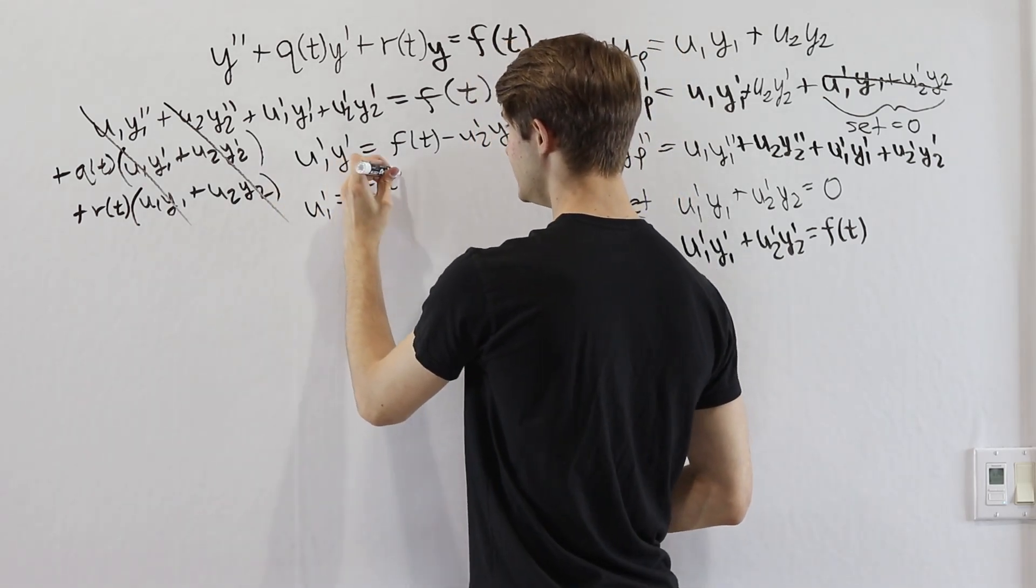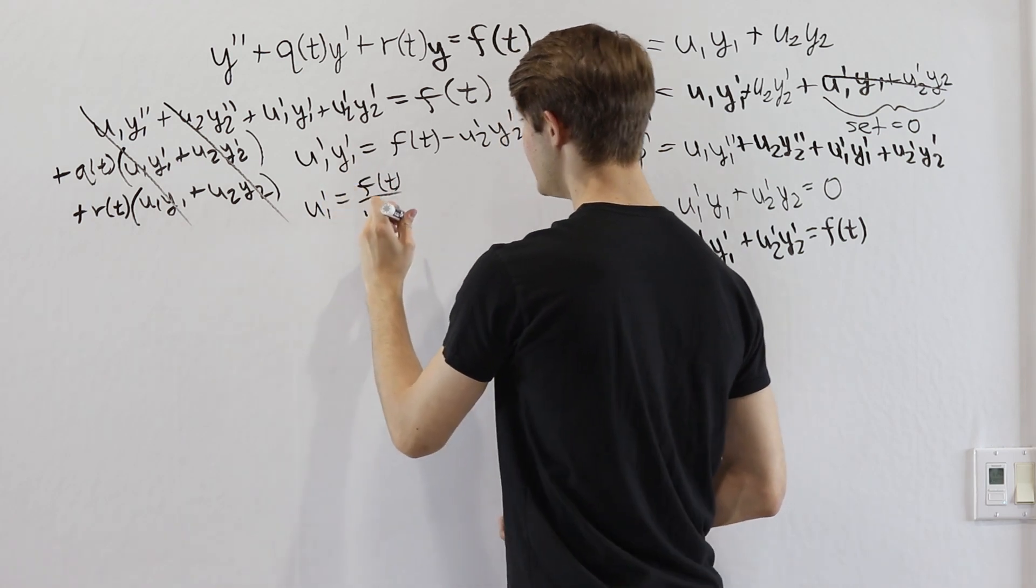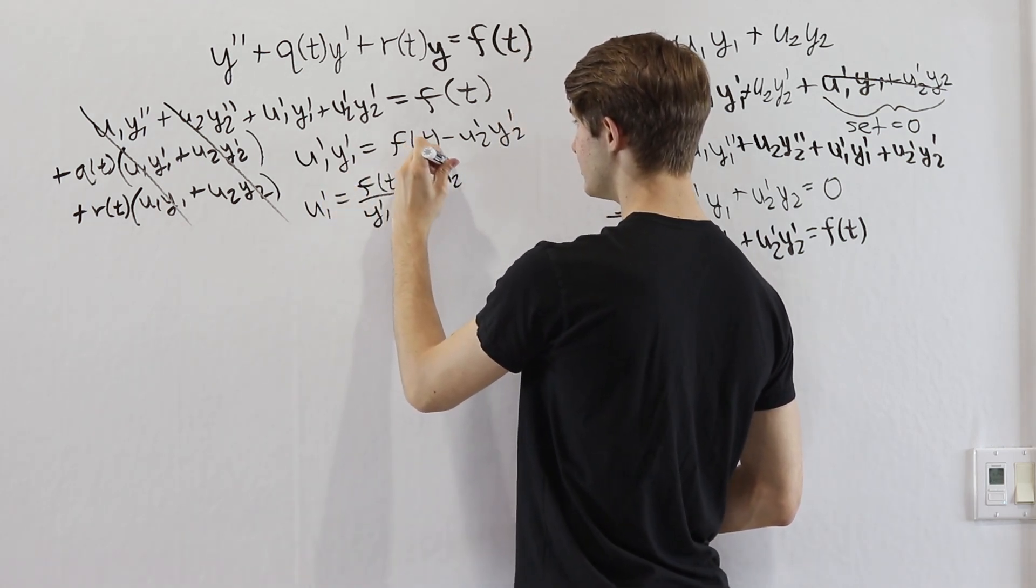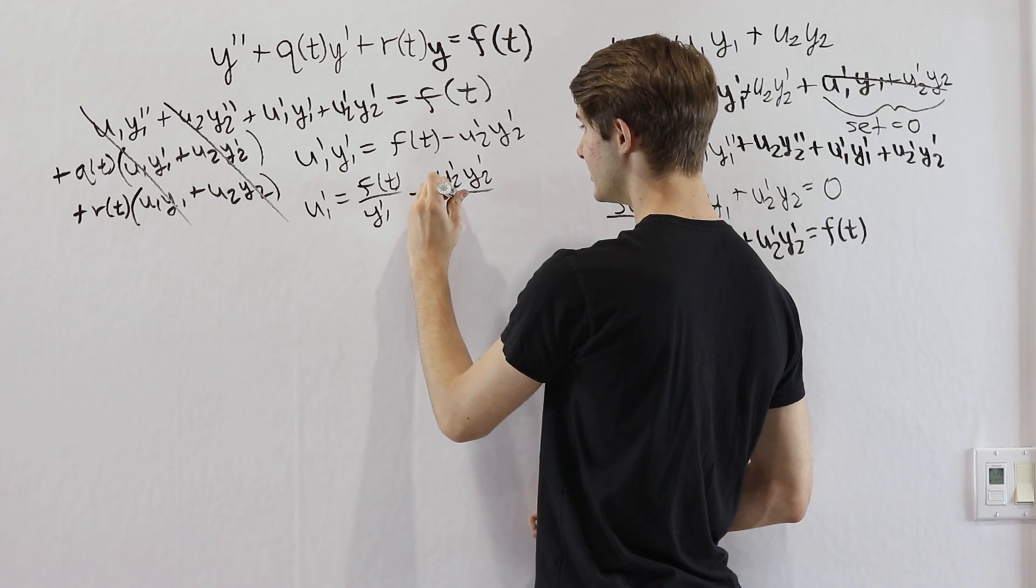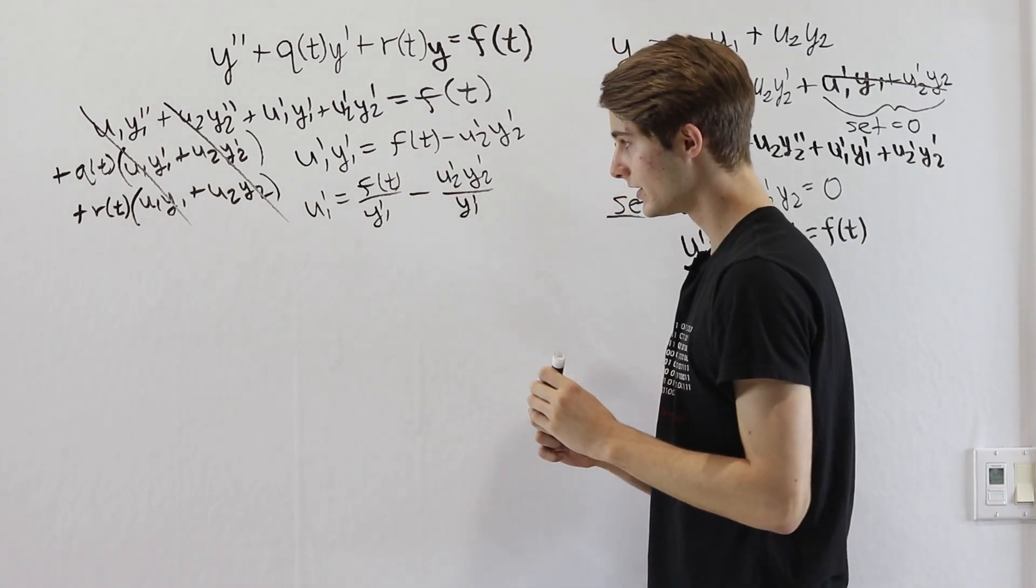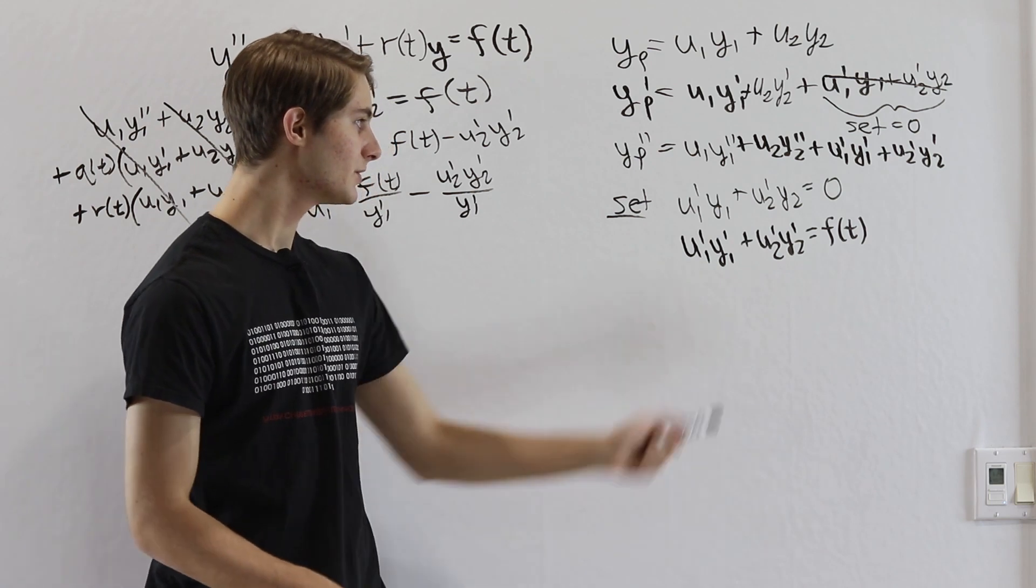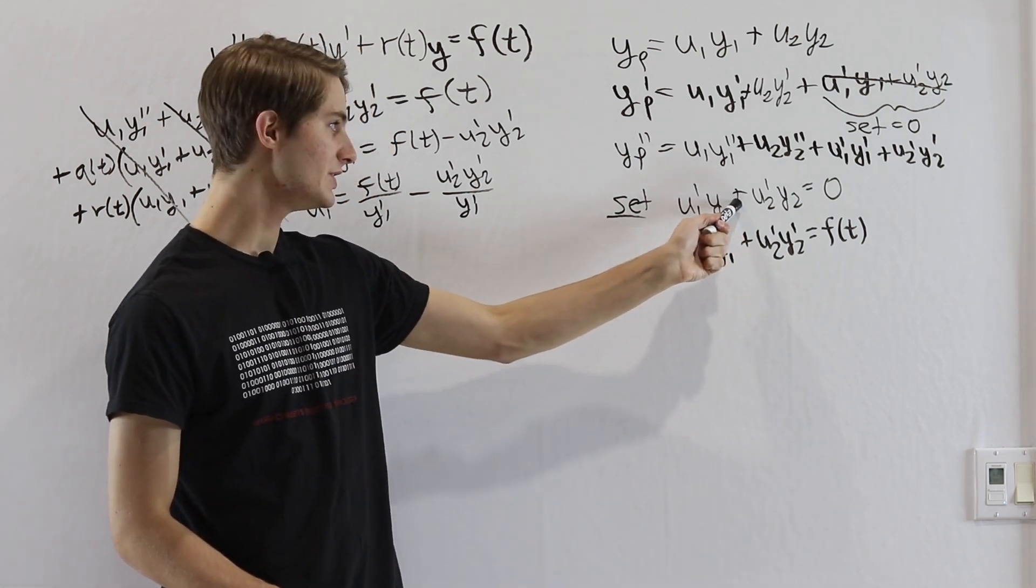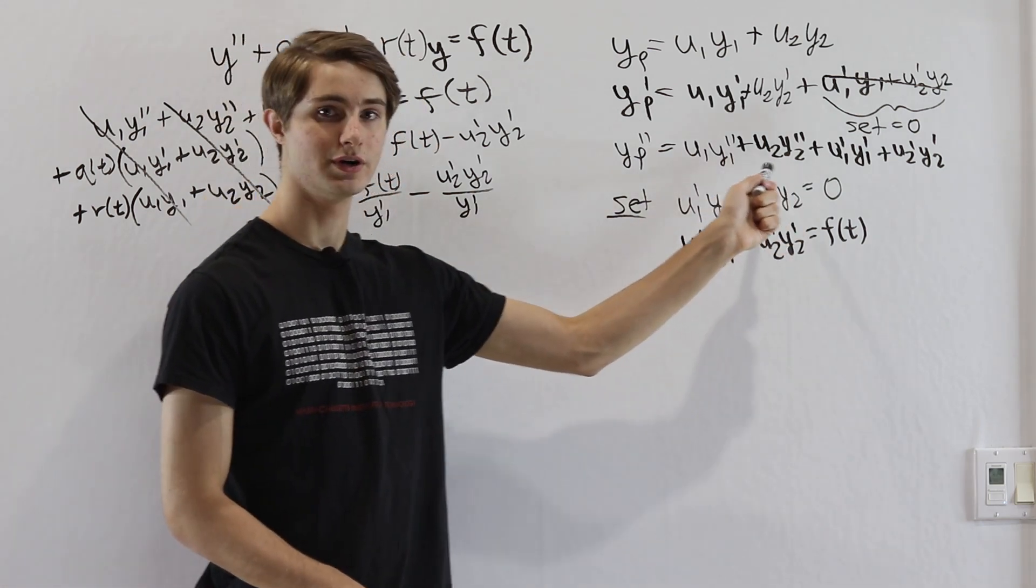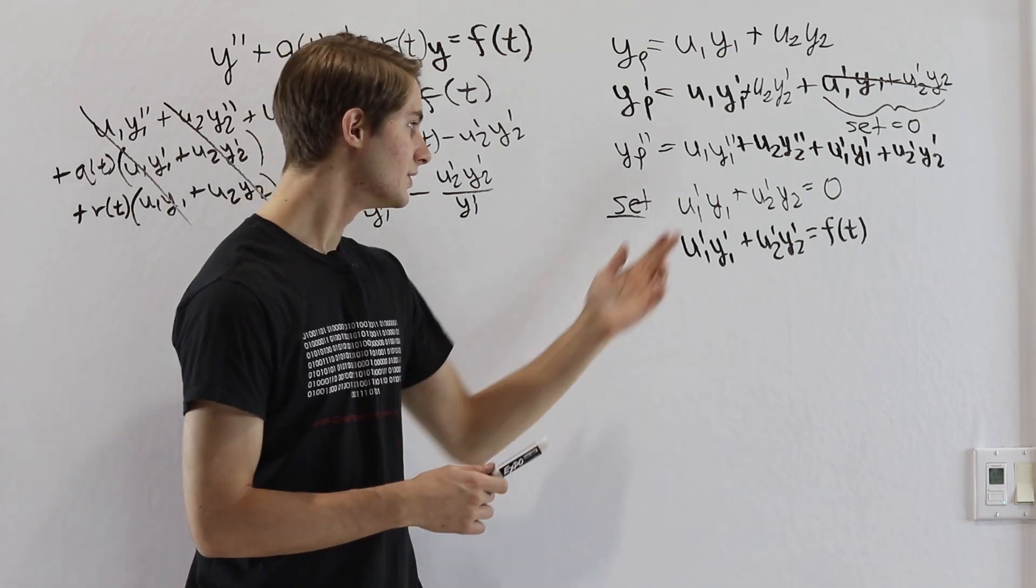And then we'll divide this through by y1 prime. So we get u1 prime equals f(t) over y1 prime minus u2 prime y2 prime over y1 prime. Now, this is our u1 prime. What we can do is plug it into our second constraint equation here and solve for the answer to u2 prime. So let's do that.